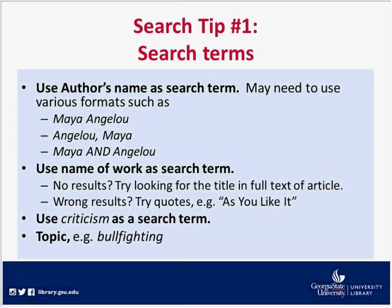You can also search broader topics. For example, 'bullfighting' might be a good topic if you're searching some Hemingway. Other examples might be 'war in literature' or 'love in literature.' Those are all ways to put your search into the context of a topic as well.